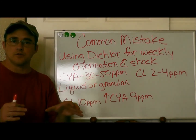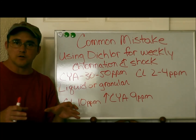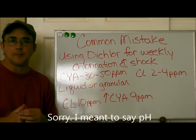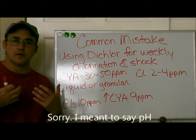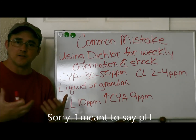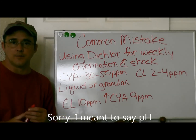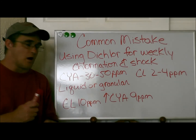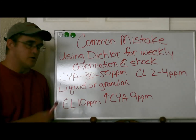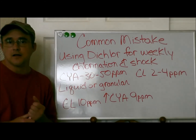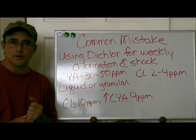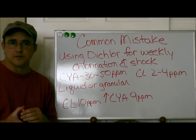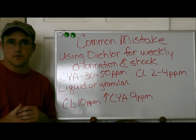Calcium hypochlorite also has a pH of 12. If you're trying to keep your pH between 7.4 and 7.8 and you're constantly using granular chlorine, you're jamming that pH up, which means you're going to be using a lot of acid to bring it back down. So those are a couple of reasons why you only want to use liquid chlorine, and never use granular chlorine for your weekly maintenance or for shocking.